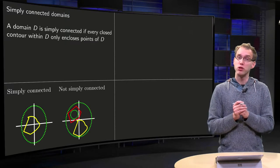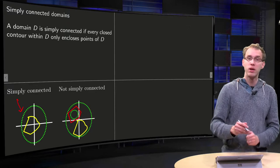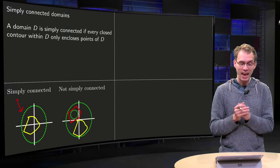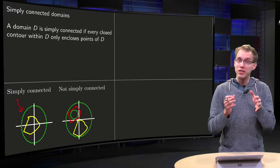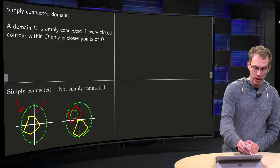The first region, the first domain, is simply connected. This domain over here is the interior of the green egg. Well, why is it simply connected?